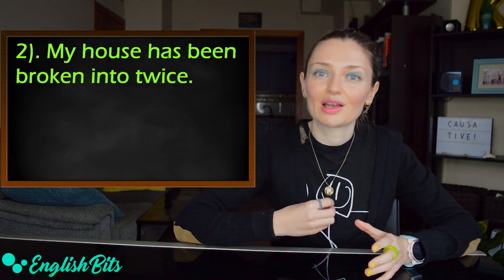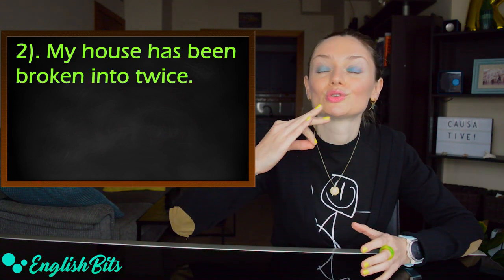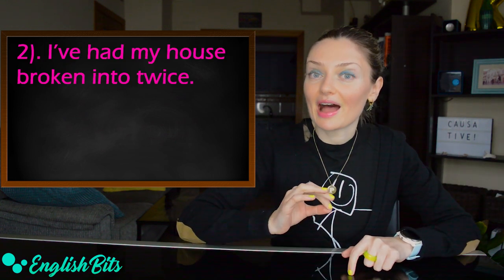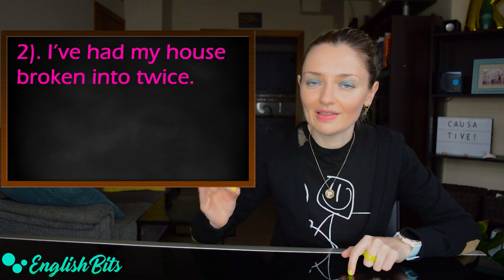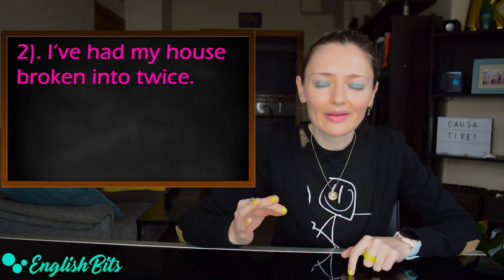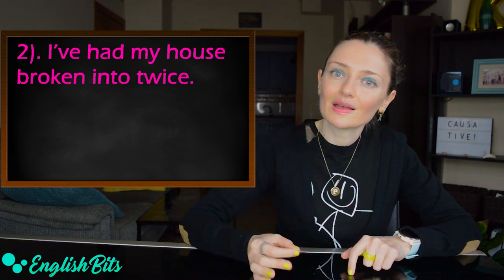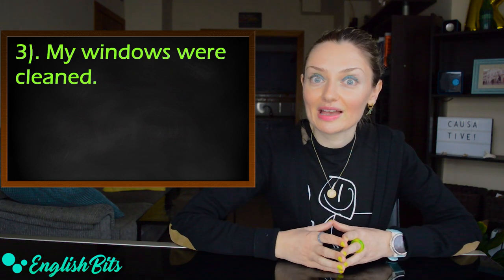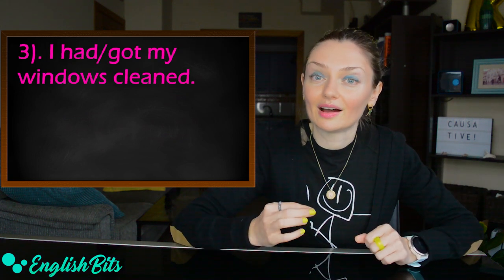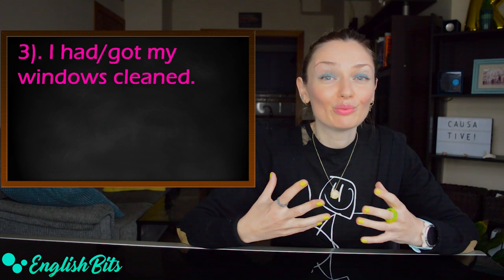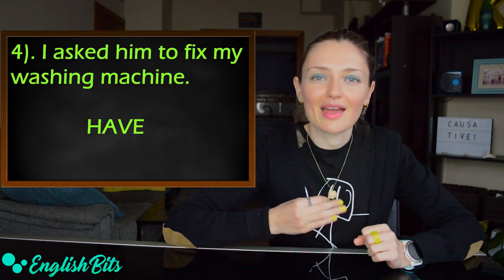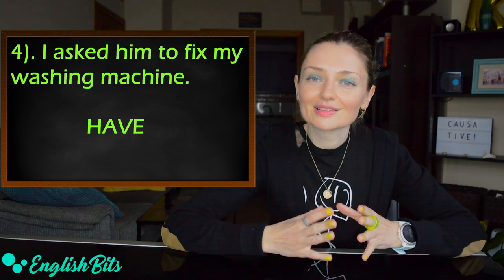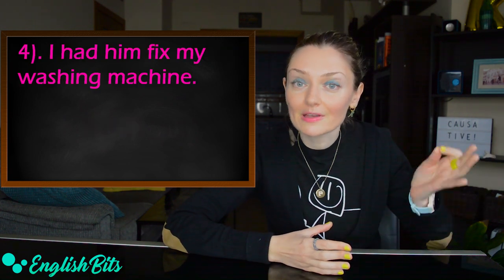Number two: My house has been broken into twice. So now I want you to transform this sentence and use the causative structure. The sentence would be: I've had my house broken into twice. In this case, we can only use the verb to have and not to get because it's something unpleasant and we didn't arrange it. The third sentence: My windows were cleaned. And the correct answer would be: I had or I got my windows cleaned. In this case, we can use both to have and to get. Number four: I asked him to fix my washing machine. I want you to use the verb to have. And the correct sentence would be: I had him fix my washing machine.